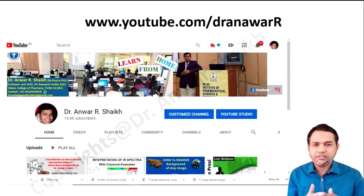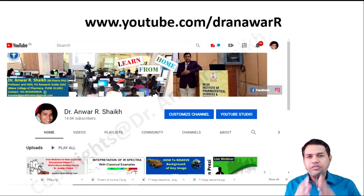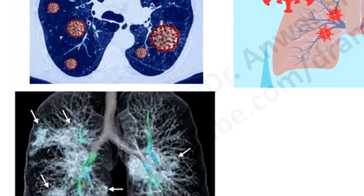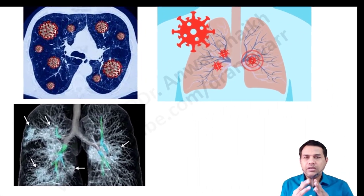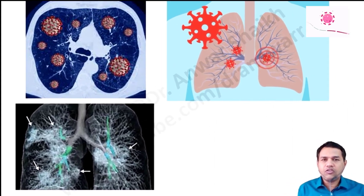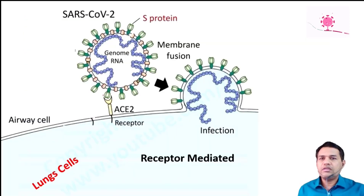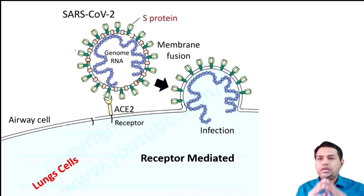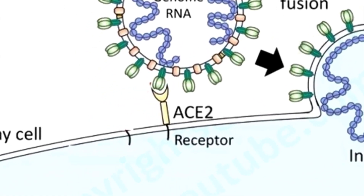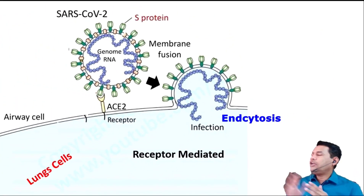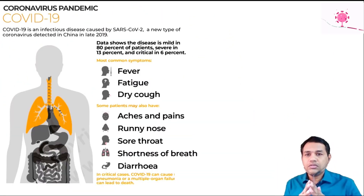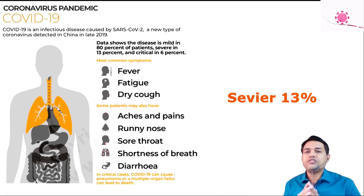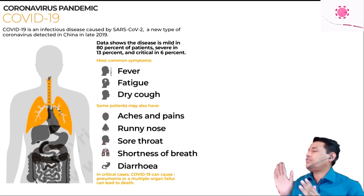The coronavirus infects our upper respiratory tract system, which includes the lungs, leading to pneumonia. The coronavirus enters lung epithelial cells via a specific receptor called the angiotensin converting enzyme receptor 2 (ACE2), through the endocytosis pathway. Data shows the disease is mild in 80% of patients, severe in 13%, and critical in 6% of patients.